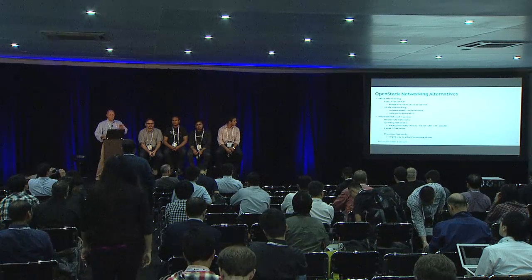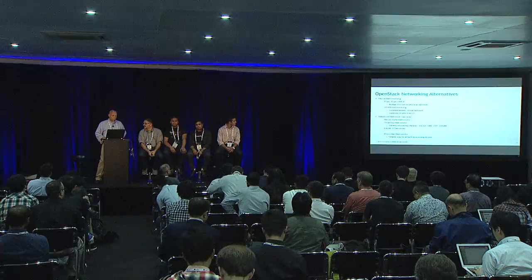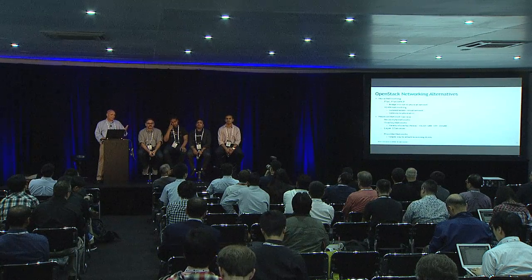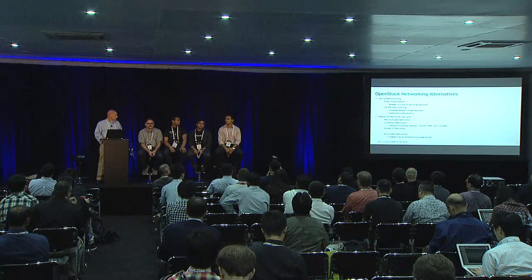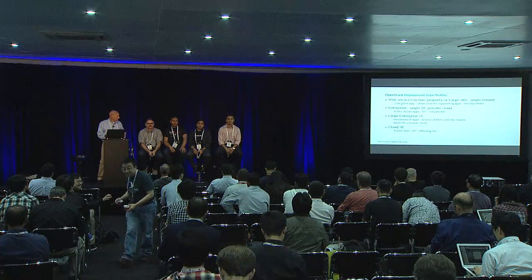The overlay technologies use a variety of different tunneling encapsulation techniques — that's not a topic we'll go into deeply today. Neutron also introduces the ability to do service insertion and provide load balancing as a service, firewall as a service, and so forth. Recently, with the Havana release, it allows you to more simply and directly access the existing physical network through something known as a provider network. So with Neutron, you have a whole new set of ways to deploy your OpenStack network.